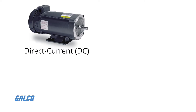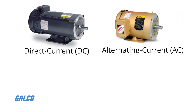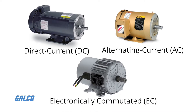DC or direct current motors and AC or alternating current motors are the most common types. A third option, the EC or electronically commutated motor, is a modern solution that might replace DC and AC motors.